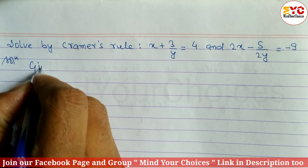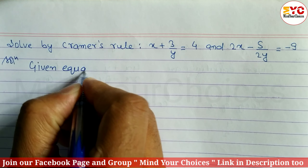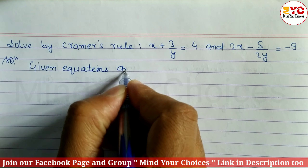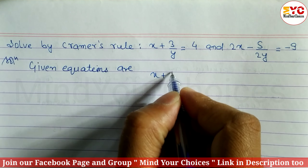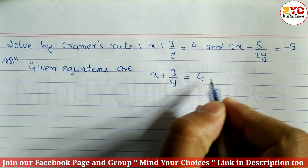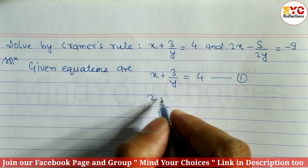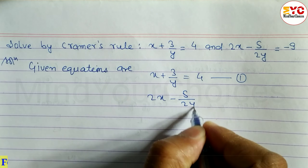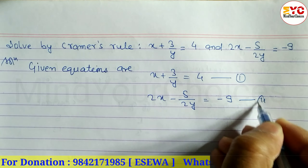Given: the two equations are — Equation 1: x + (3/y) = 4, and Equation 2: 2x − (5/2y) = −9.